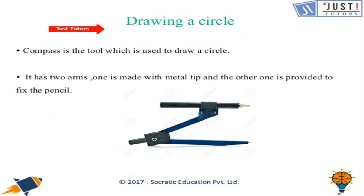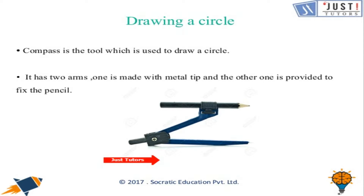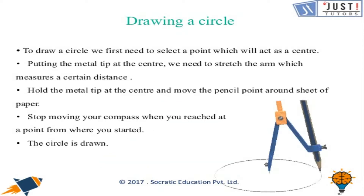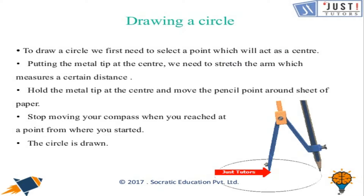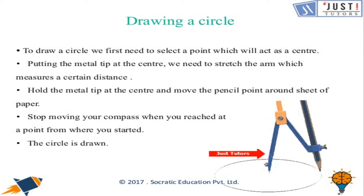Let's see how we draw a circle. This is the tool — the compass — you must have seen it. This is the tool used to draw a circle. To draw a circle, first we need to select a point which will act as the center. At the center, you put the tip of the compass, and stretch the arm to measure a certain distance. Now hold the metal tip at the center and move the pencil point around the sheet of paper. Stop moving your compass when you reach the point from where you started, and you will see that you have got the circle.